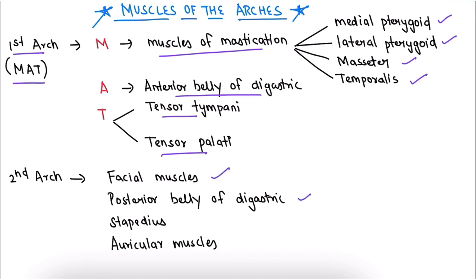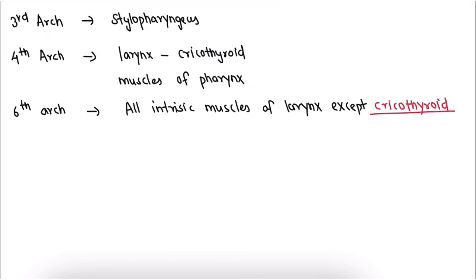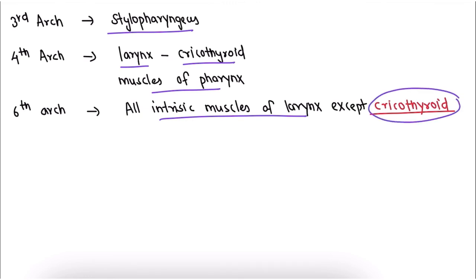For the second arch, the muscles derived are facial muscles, posterior belly of digastric, stapedius, and auricular muscles. The muscle derived from the third arch is stylopharyngeus. From the fourth arch: cricothyroid muscle and muscles of the pharynx. The sixth arch gives all intrinsic muscles of the larynx except cricothyroid, because cricothyroid is derived from the fourth pharyngeal arch.